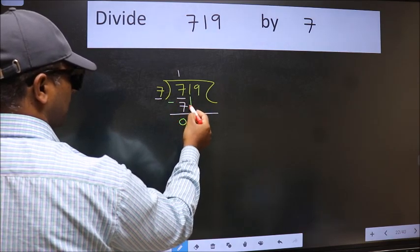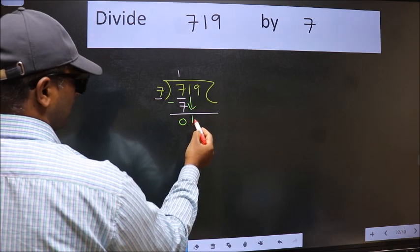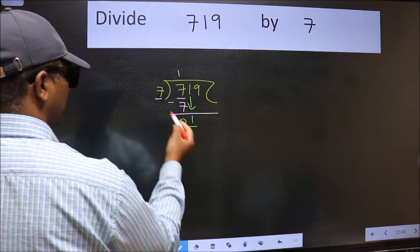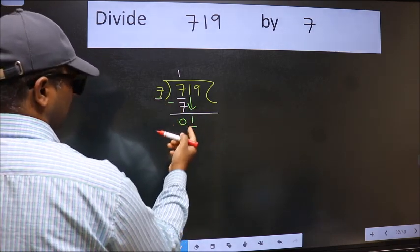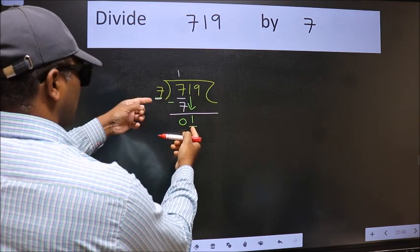After this, bring down the next number. So 1 down. Now here we have 1 and here 7. 1 is smaller than 7.